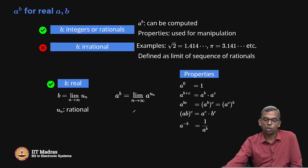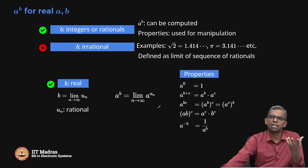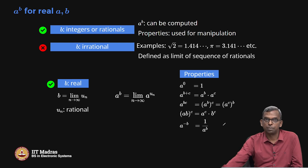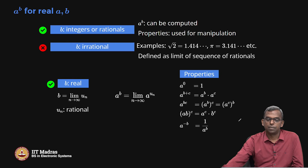All these properties also extend for a^b when a and b are real, because the limit behaves very well with powers. You can use limit properties to establish all these wonderful properties for exponentiation. These properties for exponentiation are very important — many problems can be devised using these, and you should be comfortable manipulating exponentials.